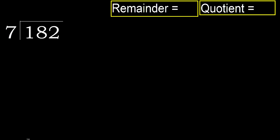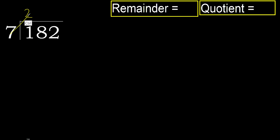182 divided by 7. 1 is less, therefore next: 18. 18 is not less, therefore with 18, 7 multiplied by which number is nearest to 18 but not greater? 7 multiplied by 3 is 21 — 21 is greater. Multiplied by 2: 14. 14 is not greater. Subtract: 18 minus 14 is 4.